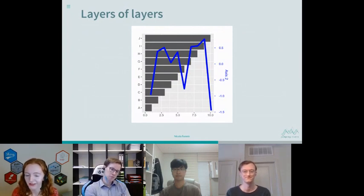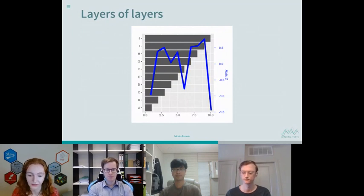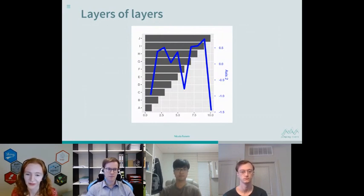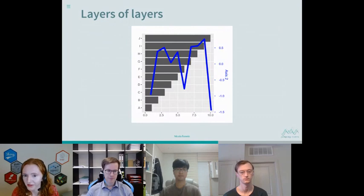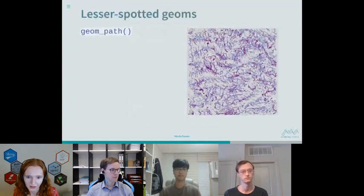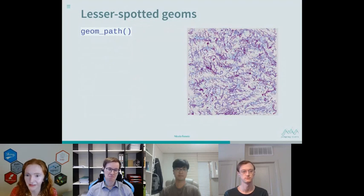This was one of the first times I was able to fix a problem in ggplot2 as a result of something I'd learned through experimenting with generative art. Now I want to quickly run through a few more examples — specifically other geoms I hadn't really used before I started playing with generative art, and some thoughts on why they might be useful. First up is geom_path.